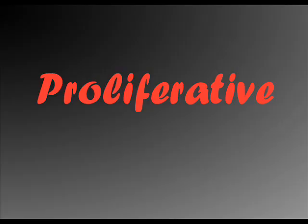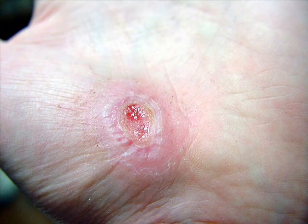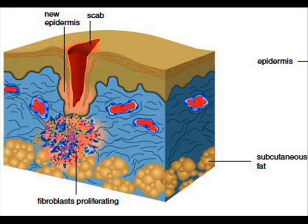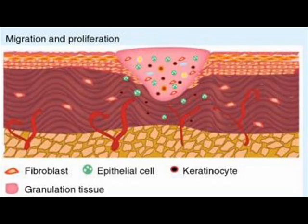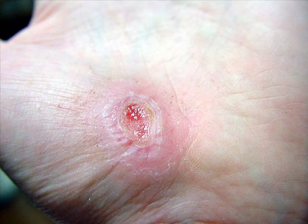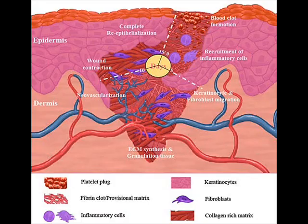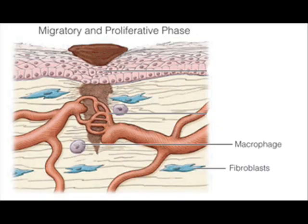The proliferative phase starts about two to three days after the wound occurs. The fibroblasts have begun to enter the site and granulated tissue begins to appear. Granulated tissue is normally bright red, moist and has a bumpy appearance. This tissue contains the new blood vessels and other components to fill in the damaged tissue. The blood clots are eventually removed by the macrophages, and the fibroblasts deposit new collagen to replace it.